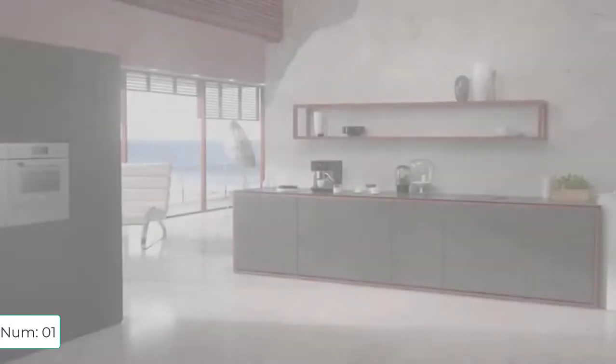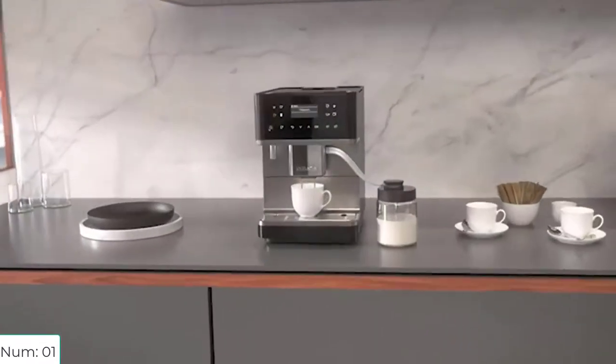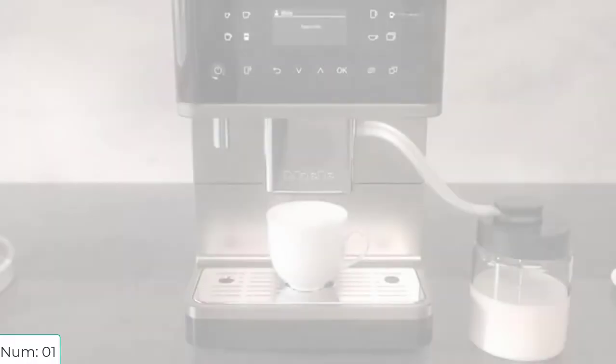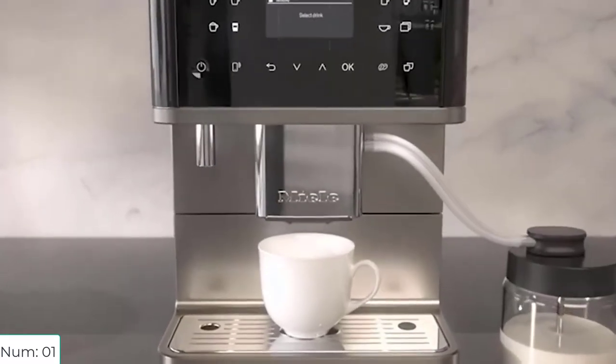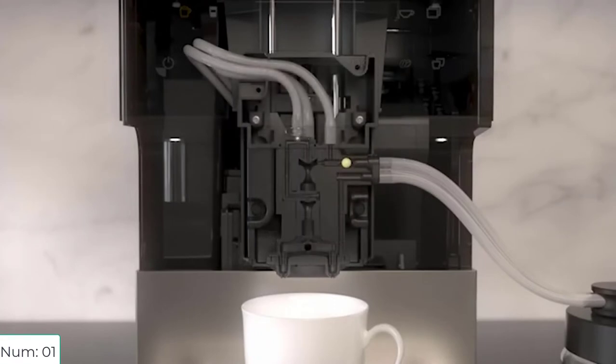Number one: Miele CM 6160 Milk Perfection automatic WiFi coffee maker and espresso machine combo in lotus white. Features include grinder, milk frother, 1.8 liter capacity, comfort clean, coffee pot function, and WiFi connectivity with one-touch preparation and individual language selection.